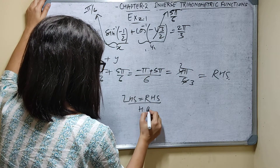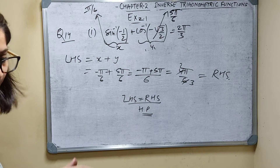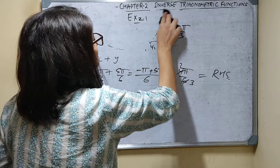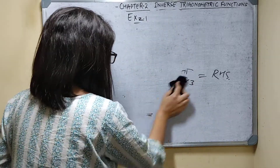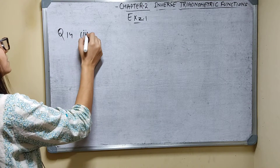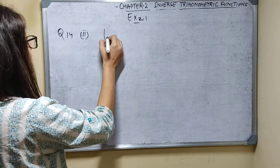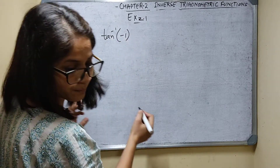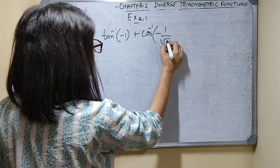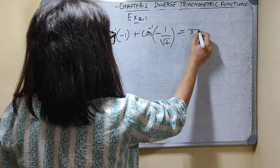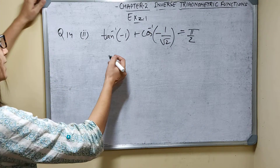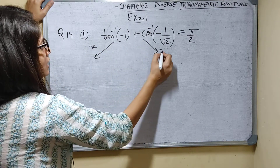Now question number 14, second part. Prove: tan inverse(minus 1) plus cos inverse(minus 1 by root 2) equals pi by 2. Let tan inverse(minus 1) equal x and cos inverse(minus 1 by root 2) equal y.